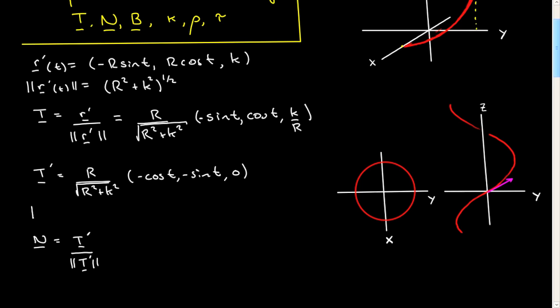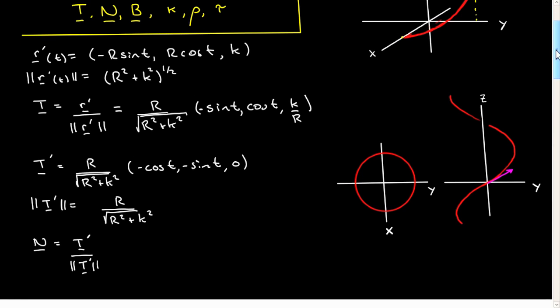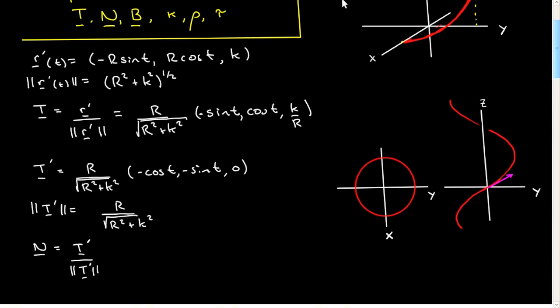We need the modulus of T prime. Actually, we could have just read this off. In fact, the modulus is just R divided by square root of R squared plus K squared. We now have everything we need to compute the unit normal vector. You'll get minus cosine T, minus sine T, zero. In this case, the normal vector, the unit normal vector, has no component in the Z direction.